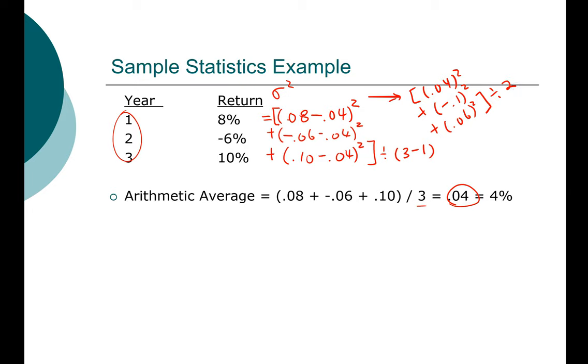You can work out the rest of the arithmetic. In the end, you're going to come up with the variance. Did you get 0.0076? I encourage you to pause the video and use your own calculator to go through the calculation to make sure that you understand how the numbers are derived. So 0.0076 is the variance of this stock.